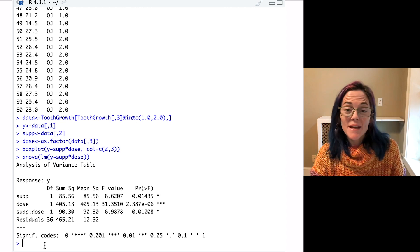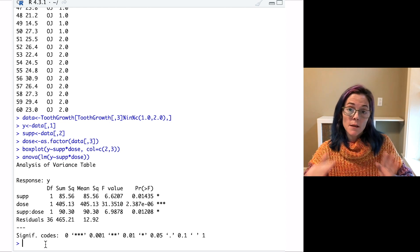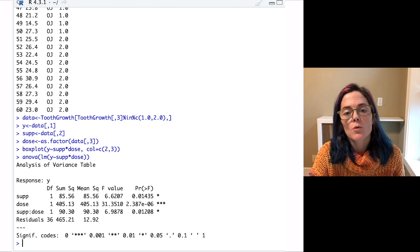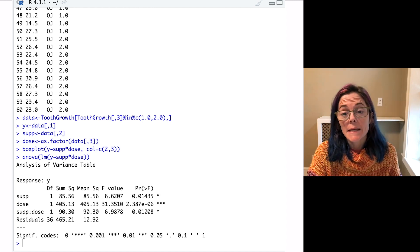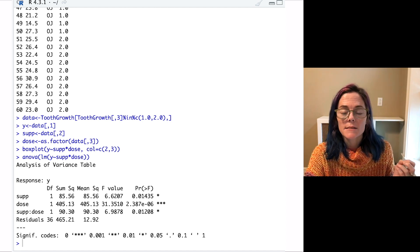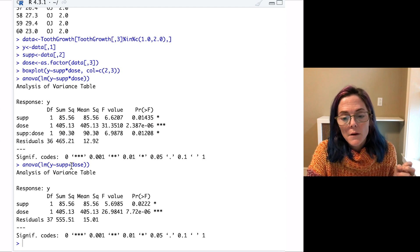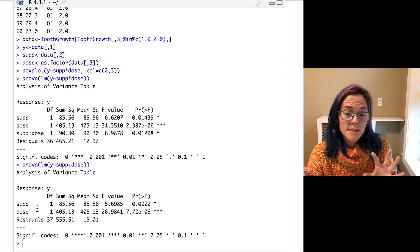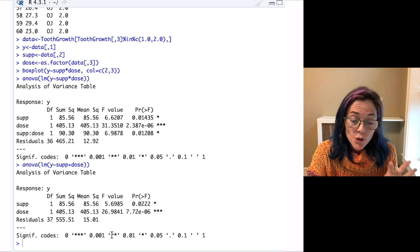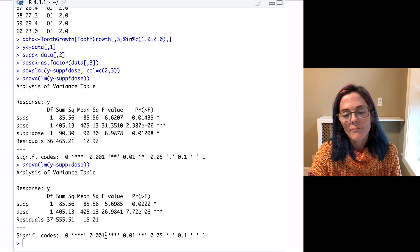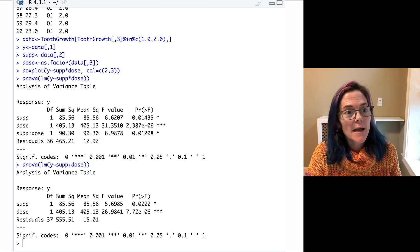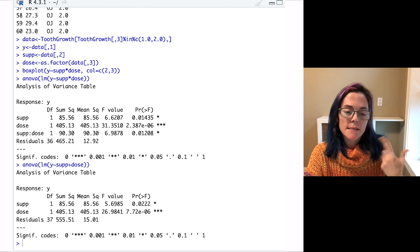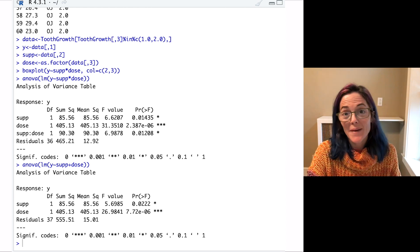Now, if for some reason we were only interested in the main effects and not the interaction, we could run the exact same command except put a plus instead of a times. You see, now we just have this two-way ANOVA table without the interaction term. I think the final thing I'll mention in this video is this summary. So let's go back to my iPad.